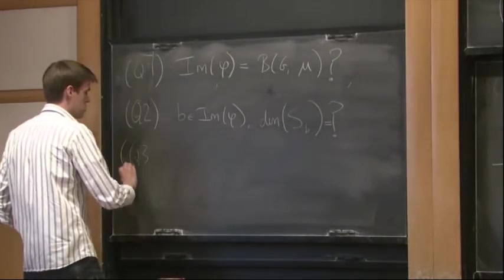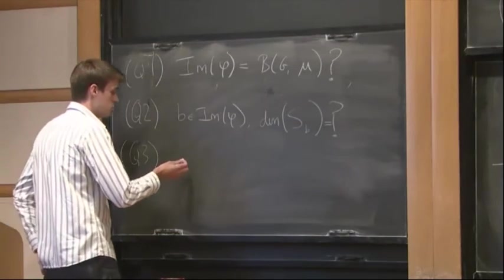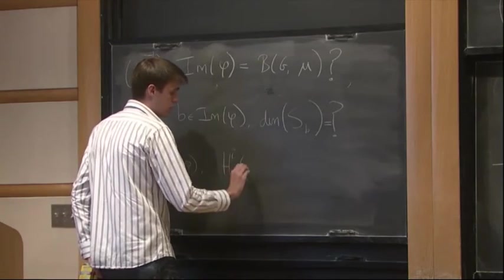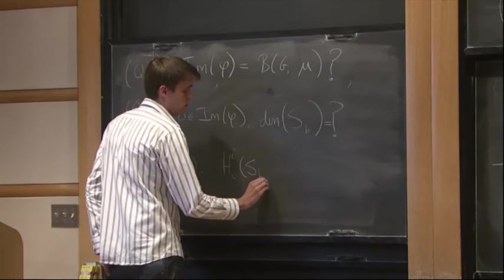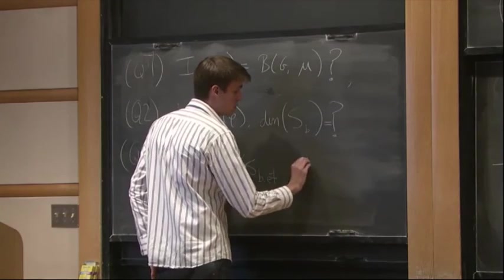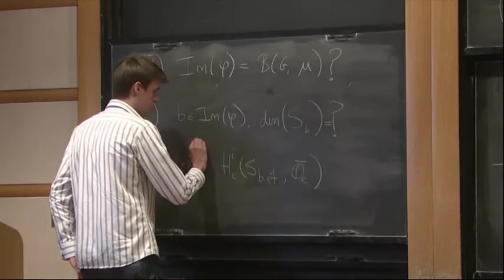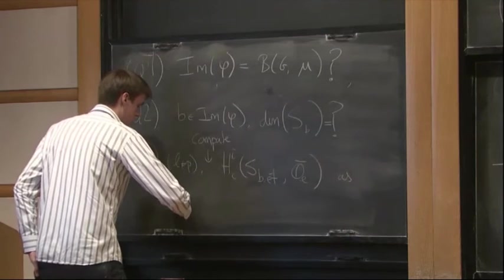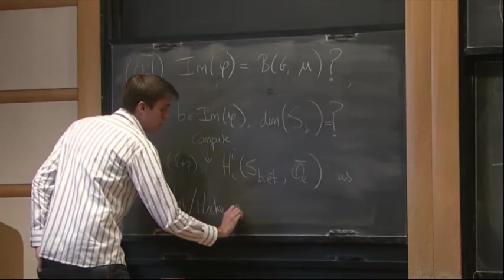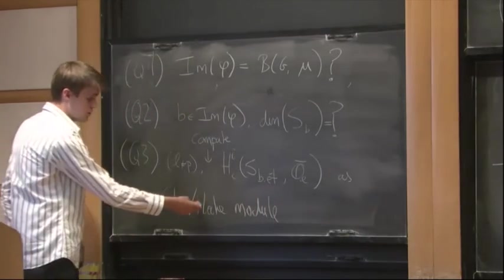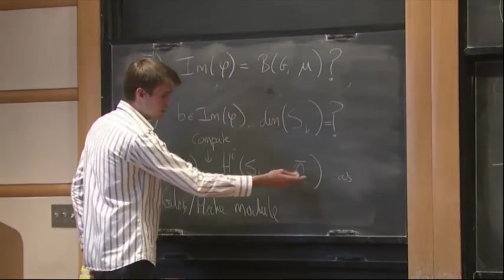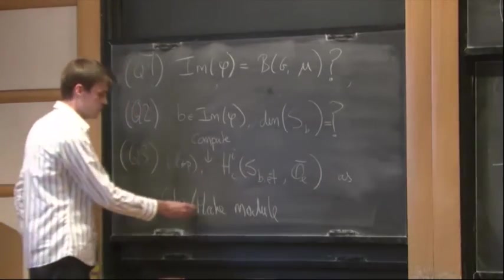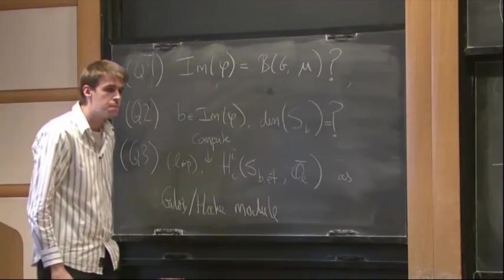So the third question would be, so suppose you take L some prime number, which is not P, and you compute étale cohomology of the Newton strata. So maybe I should say compute as Galois slash Hecke module. So you have actions of Hecke operators. And these Hecke operators, they make this étale cohomology space into a module over the Hecke algebra. So you can wonder what is the structure of this module in terms of these two things.